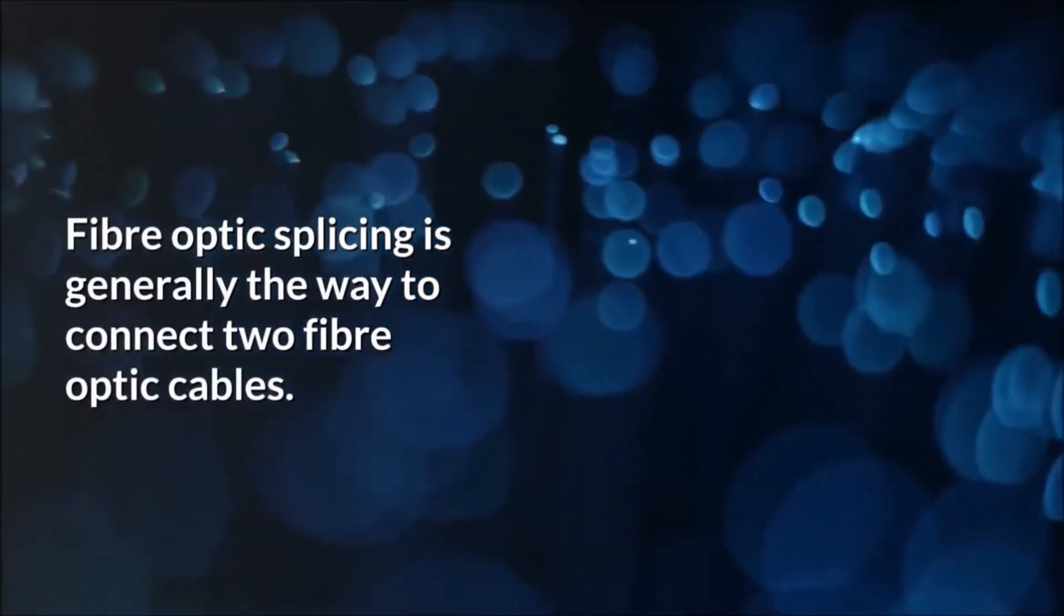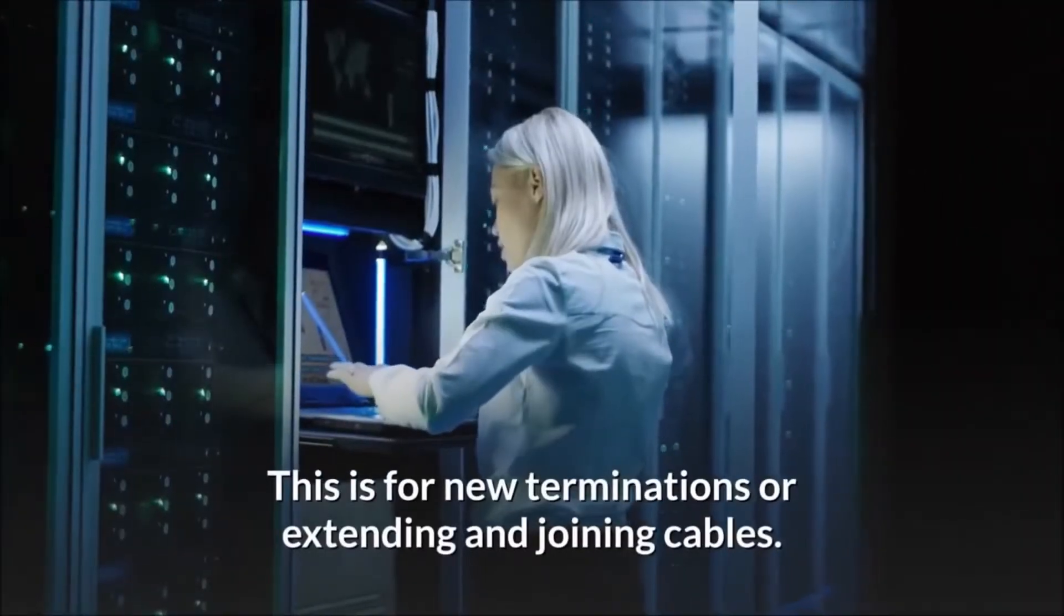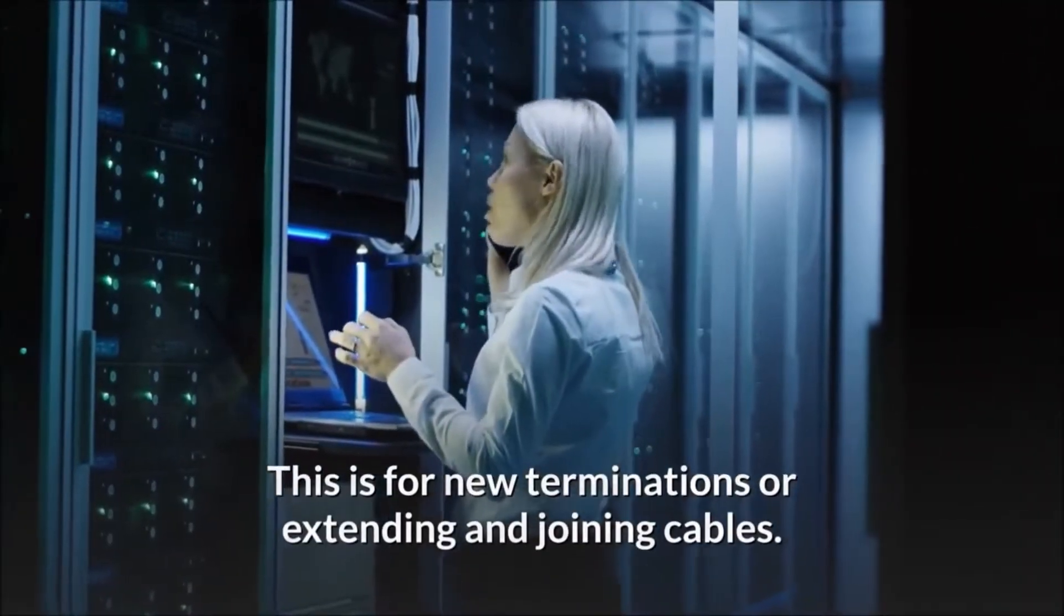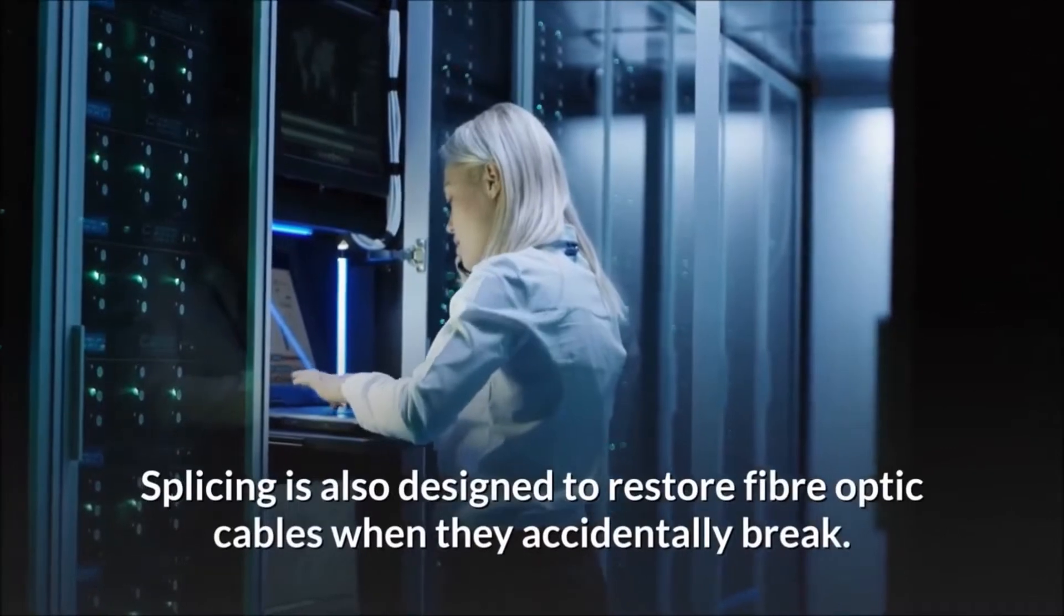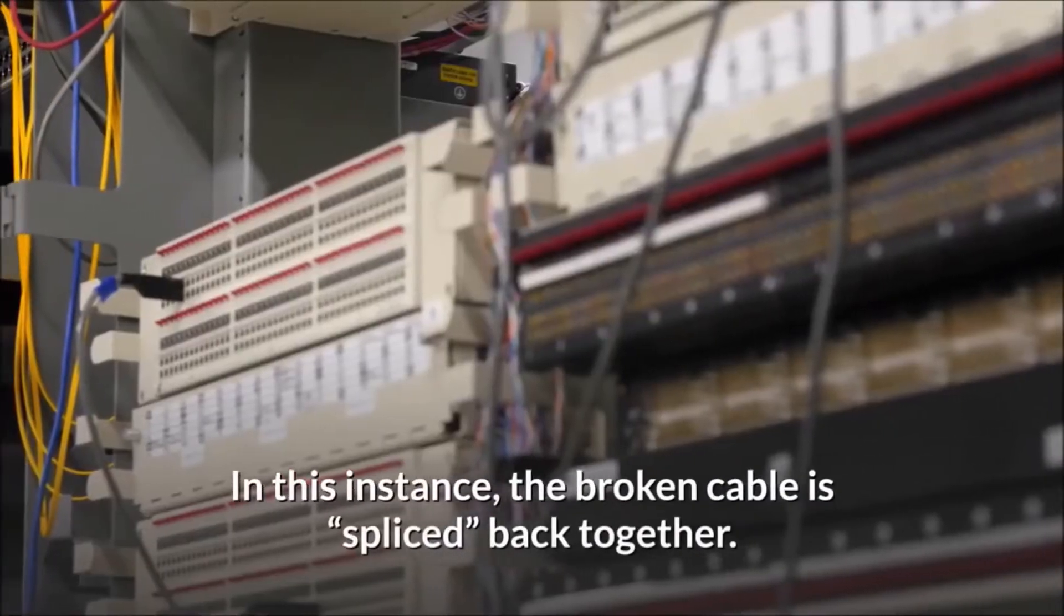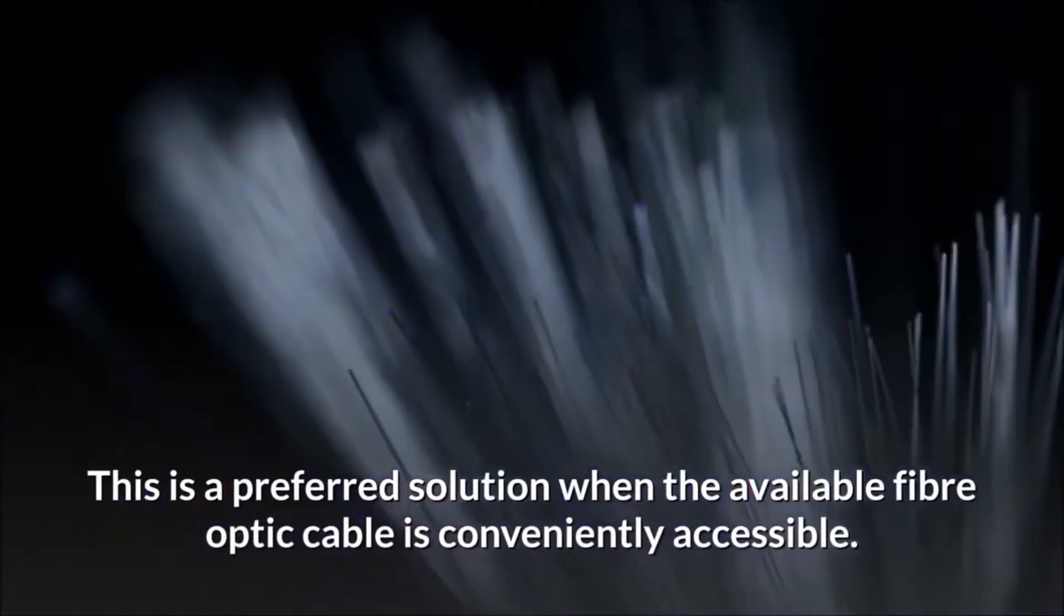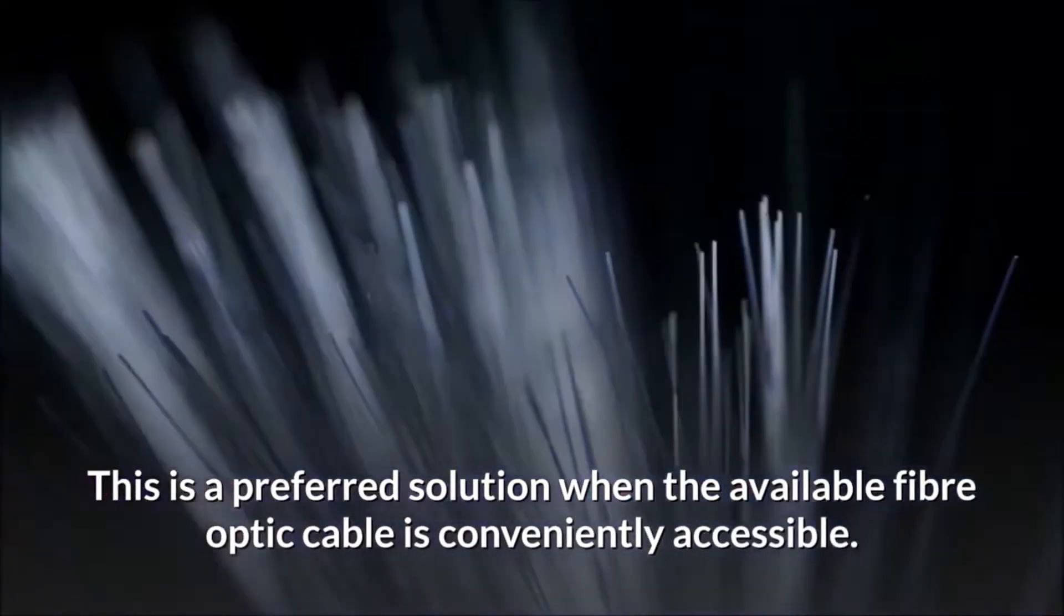Fiber optic splicing is generally the way to connect two fiber optic cables. This is for new terminations or extending and joining cables. Splicing is also designed to restore fiber optic cables when they accidentally break. In this instance, the broken cable is spliced back together. This is a preferred solution when the available fiber optic cable is conveniently accessible.